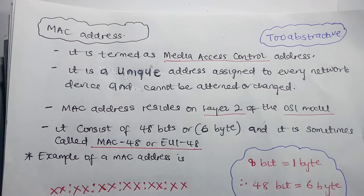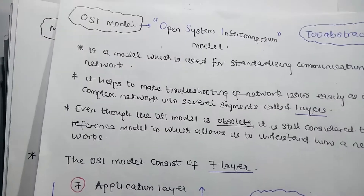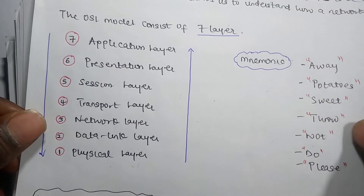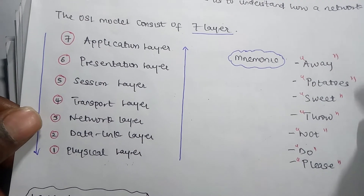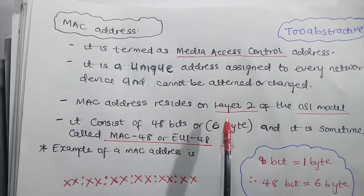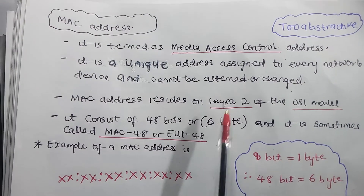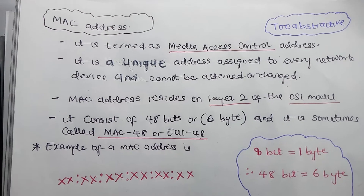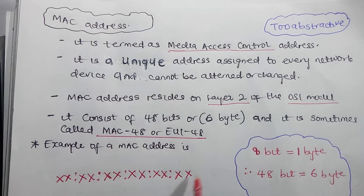The MAC address resides on layer 2 of the OSI model. The OSI model, as we discussed in the previous video, is the model used in standardizing communication across a network. It consists of 7 layers. The MAC layer resides on layer 2, which is called the Data Link Layer. MAC address consists of 48 bits or 6 bytes, and it is sometimes called MAC-48 or EUI-48.